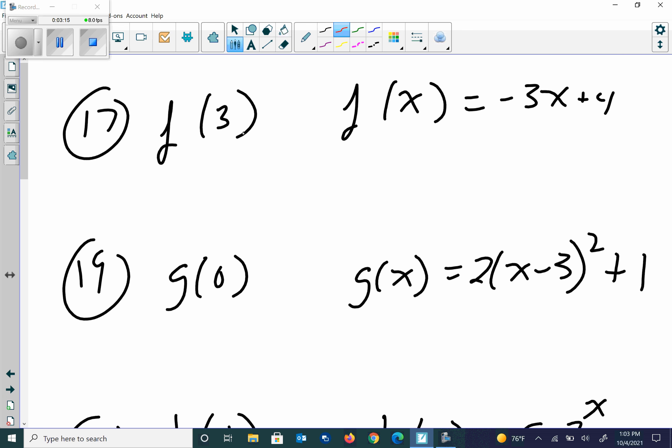Problem number 17. We want f at 3, so we're going to use the f at x equation. So I'm going to take this 3, and I'm going to replace it here. So I'm going to get negative 3 times 3 plus 4. So that's negative 9 plus 4, which gives me negative 5.